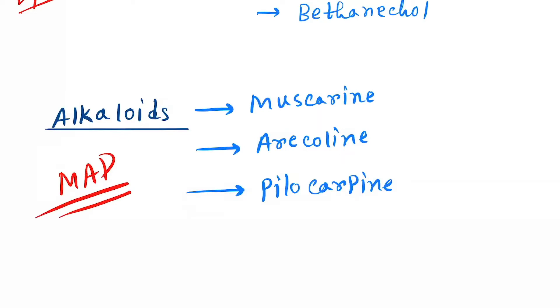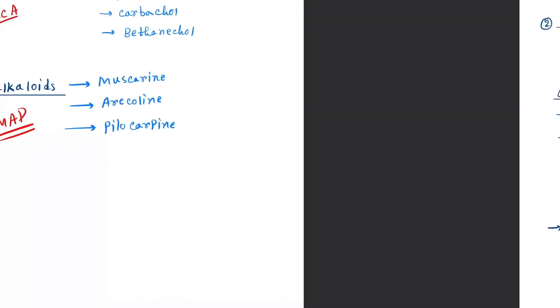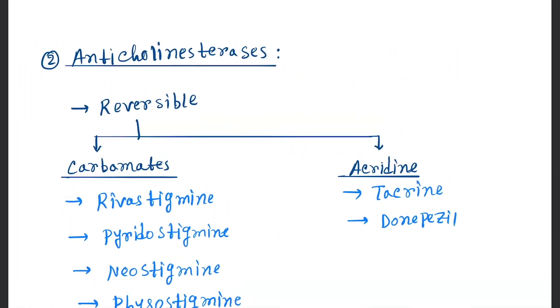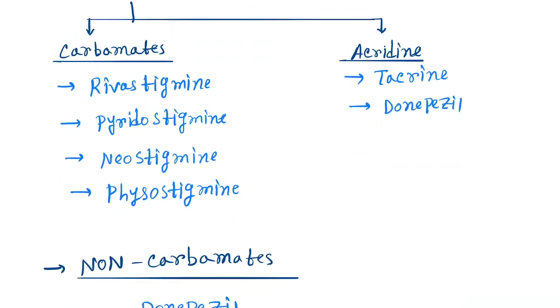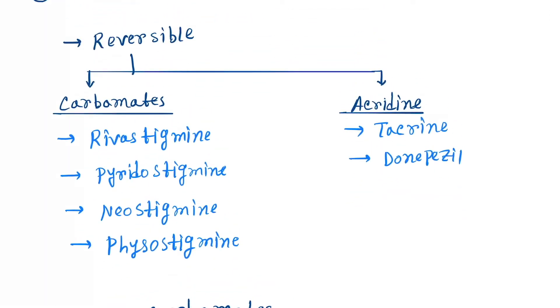M for Muscarine, A for Arecoline, P for Pilocarpine. Next is the anticholinesterases. There are two types: reversible, which includes carbamates and acridine. For carbamates, you can remember RPNP.